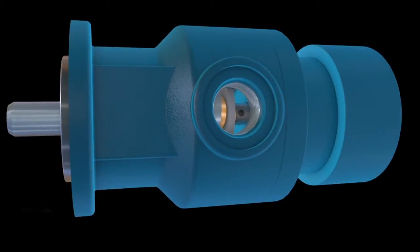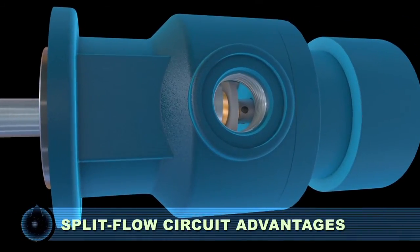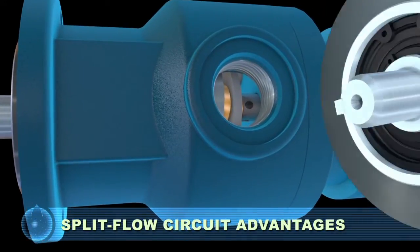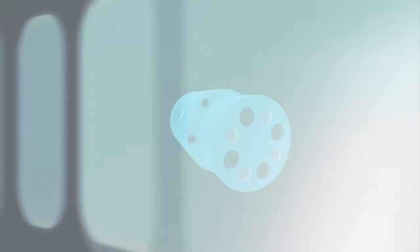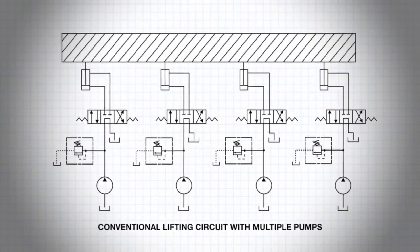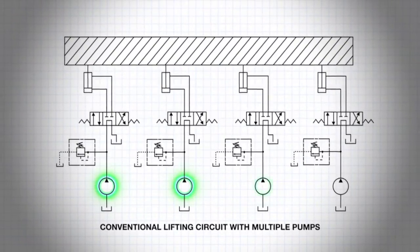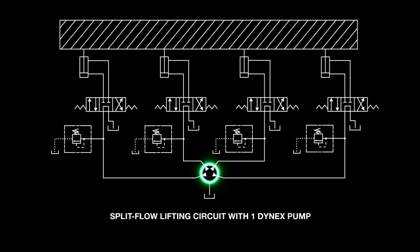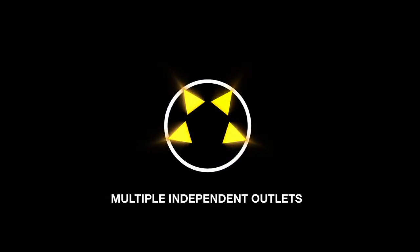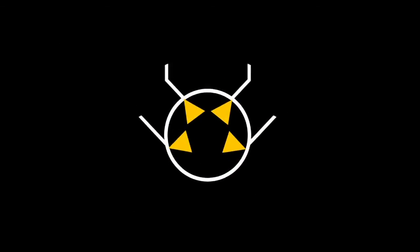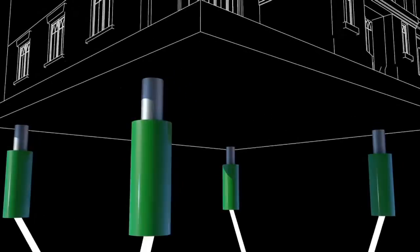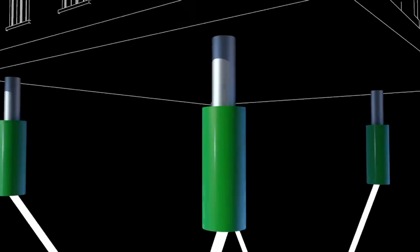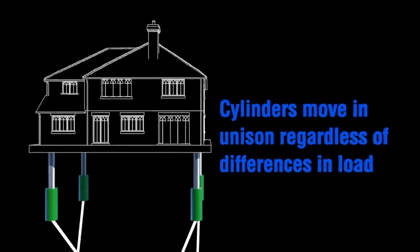Split flow pumps provide unique advantages. Let's look at some examples. Conventional lifting circuits use multiple pumps or flow dividers which provide inconsistent flows. A single four outlet Dynex pump reduces the components and simplifies the circuit. Each piston in the pump acts like a miniature pumping unit. The split flow pump supplies consistent output flow from each outlet for greater lifting accuracy.